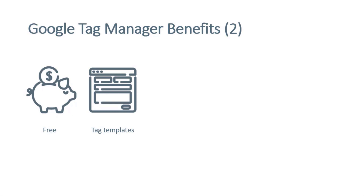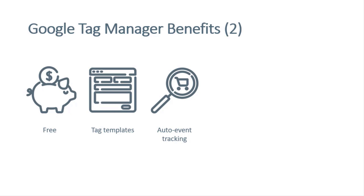Google Tag Manager also offers auto event tracking functionality, which means you can track certain interactions with the built-in functionality in GTM — like clicks, scrolling, YouTube video interactions, and when an element appears on the screen. If the auto event tracking capabilities don't work in a certain case, you can find custom functionalities provided by various members in the GTM community.